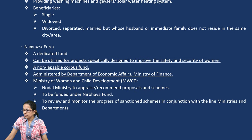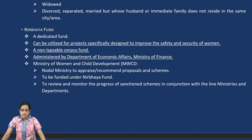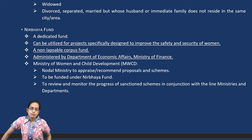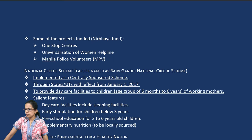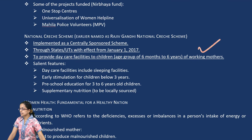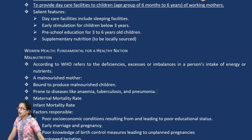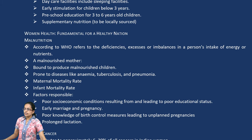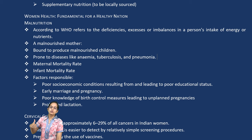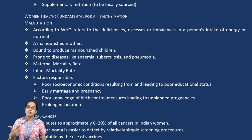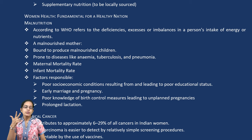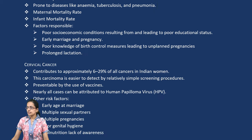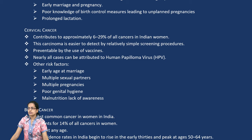The Nirbhaya Fund is for the safety and security of women — it's a non-lapsable corpus fund administered by the Department of Economic Affairs under the Ministry of Finance. The Creche Scheme provides facilities especially for working mothers. Malnutrition is one of the major killers in India — maternal mortality, infant mortality, anemia, tuberculosis, and pneumonia are major factors. Cancerous diseases and their risk factors also need to be addressed.